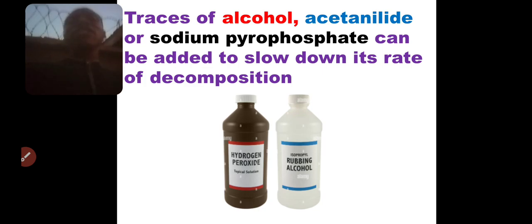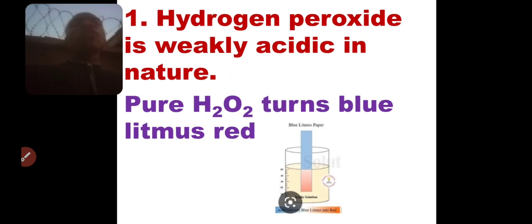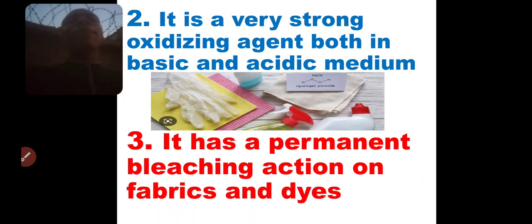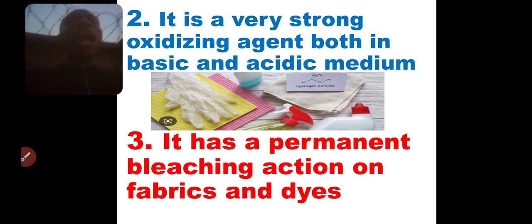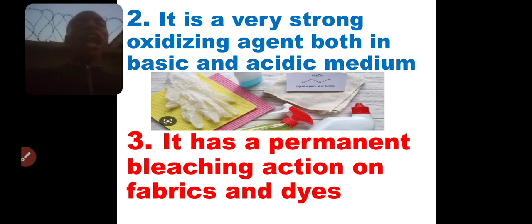The properties of hydrogen peroxide: number one, it is weakly acidic in nature, hence it turns blue litmus paper red. Number two, it is a very strong oxidizing agent, both in acidic and basic medium. Next, it has a permanent bleaching action on fabric and dye — it is an excellent bleach that can bleach fabrics and remove color because of its very high oxidizing ability. That is what you should know about hydrogen peroxide.